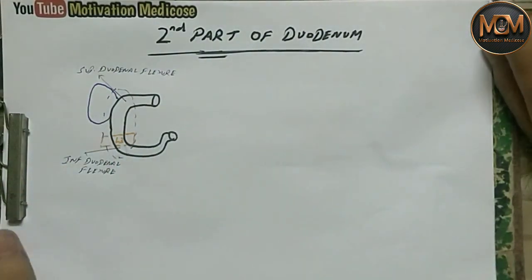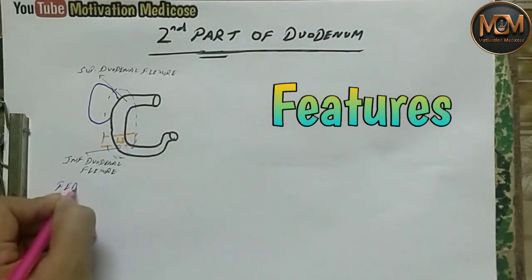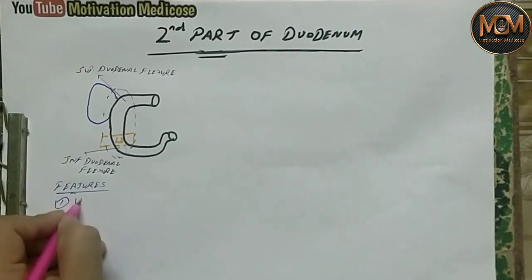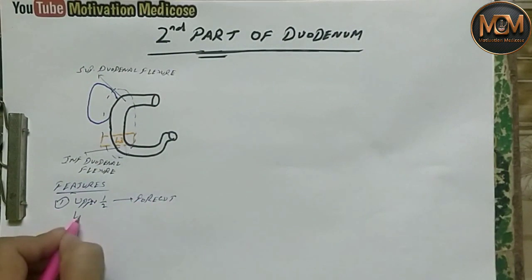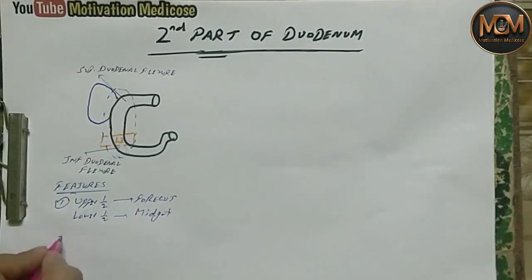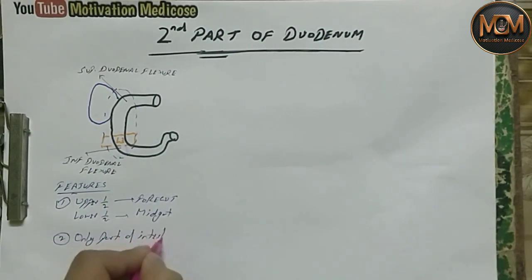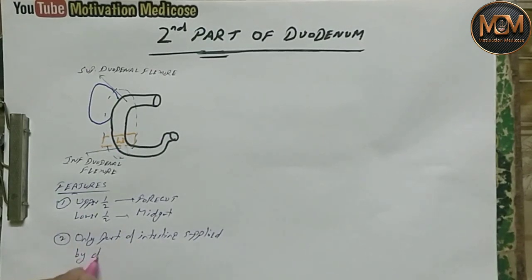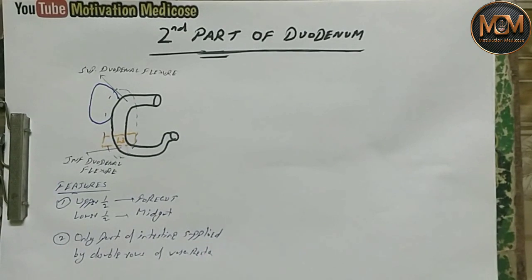Now we will see some features of the second part of duodenum. The first important feature is that the upper half of the second part of duodenum is formed by the foregut, and the lower half is formed by the midgut. Another important point is that it is the only part of the intestine which is supplied by a double row of vasa recta.